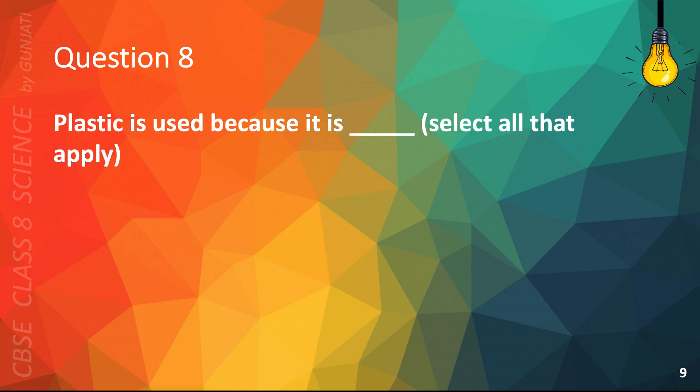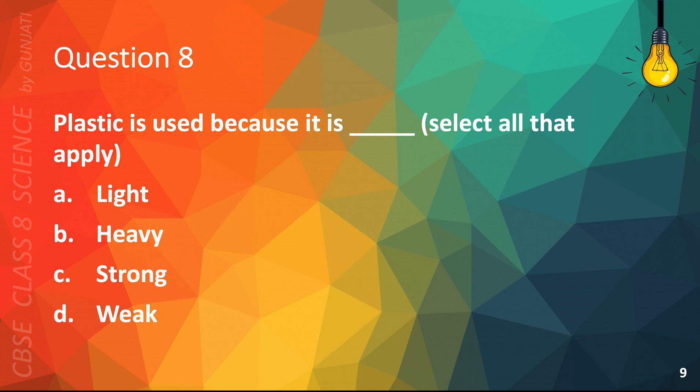Question 8. Plastic is used because it is blank. Select all that apply. A. Light, B. Heavy, C. Strong, or D. Weak. The correct answers are A. Light and C. Strong.